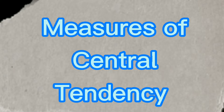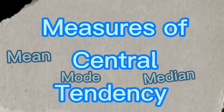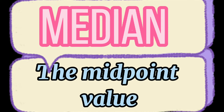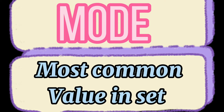Measures of Central Tendency. We have three measures of central tendency: the mean, median, and the mode. Mean is commonly called the average, median is the midpoint value, and the mode is the most common value in the set.